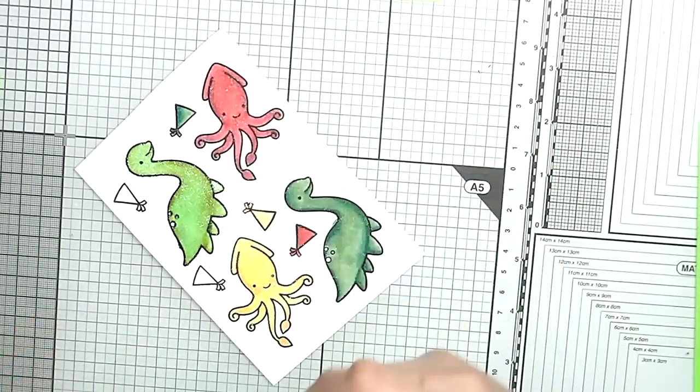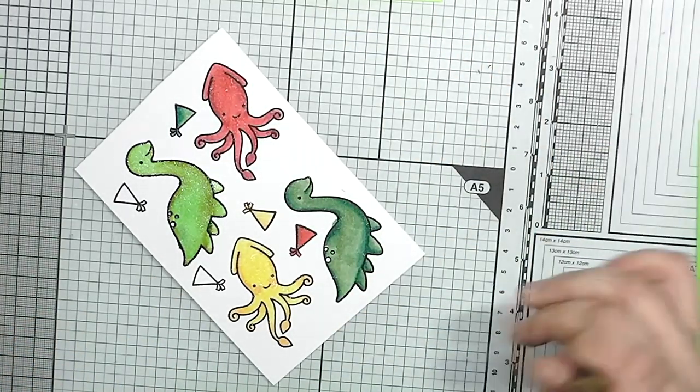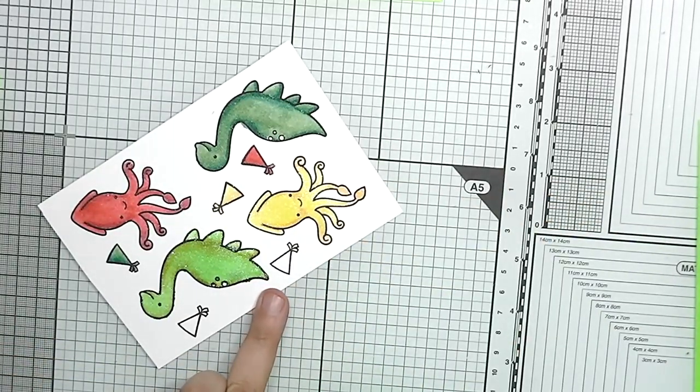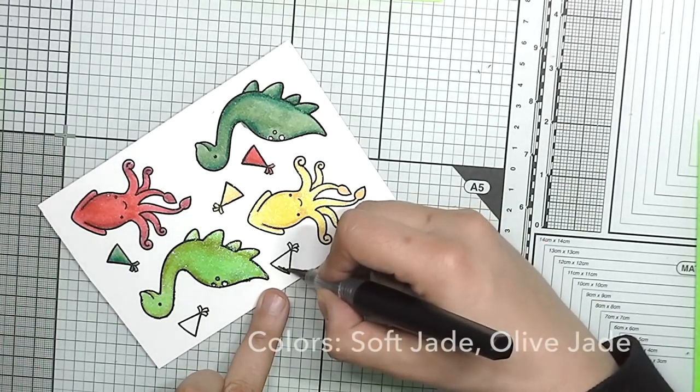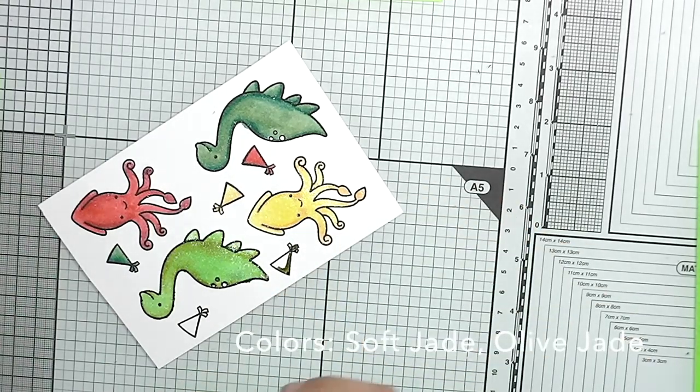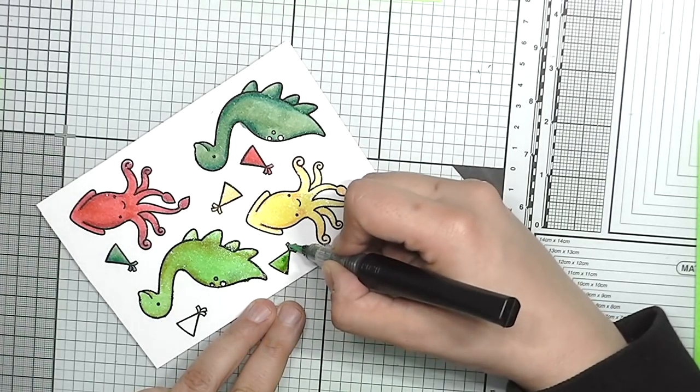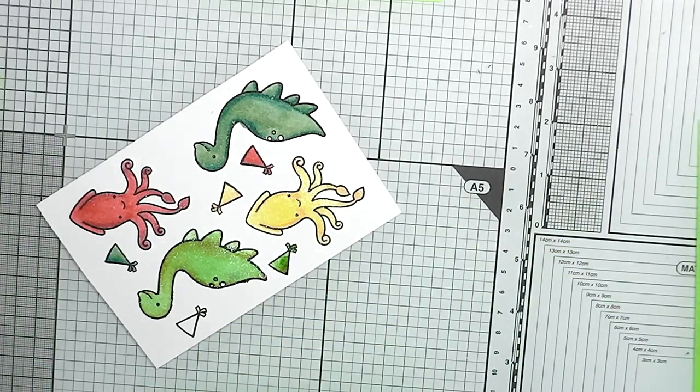And when I'm done coloring I will just dry it with my heat tool to make sure I don't smudge it when I cut them out later, because I never let anything air dry because I'm pretty impatient. And I want to do stuff all the time. I wouldn't be able to live without my heat tool.